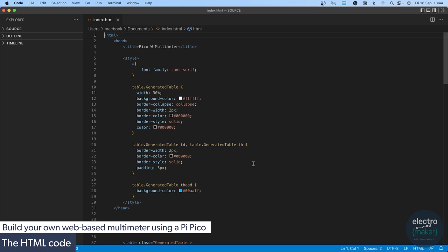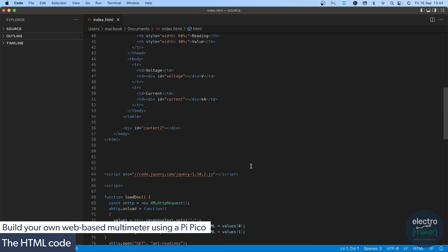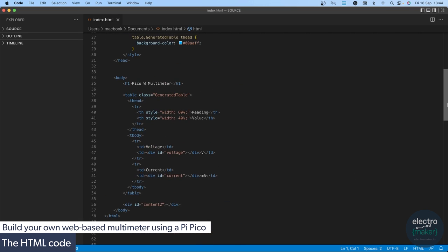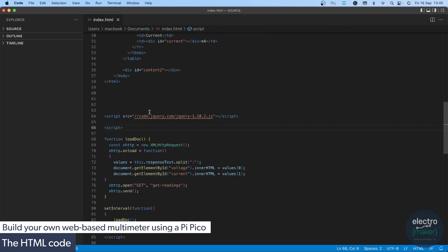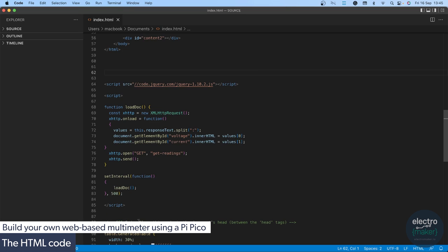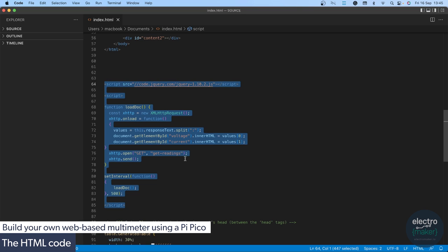The second part of this project is the HTML file that's sent to the user. Now as you can see here we have a bunch of styling code for CSS - this is not important, it just styles the table to make it look nice. If we scroll down there are two pieces of code that are very important. The first one is the table that represents our readings, and this basically has a voltage and the current status.